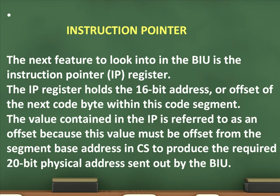Instruction Pointer. The next feature to look into in the BIU is the instruction pointer IP register. The IP register holds the 16-bit address or offset of the next code byte within the code segment. The value contained in the IP is referred to as an offset because this value must be offset from the segment base address in CS to produce the required 20-bit physical address sent out by the BIU.